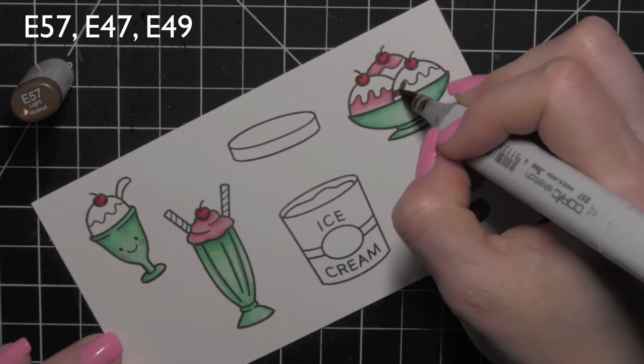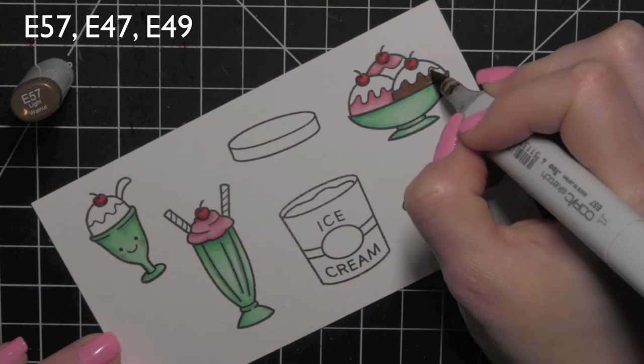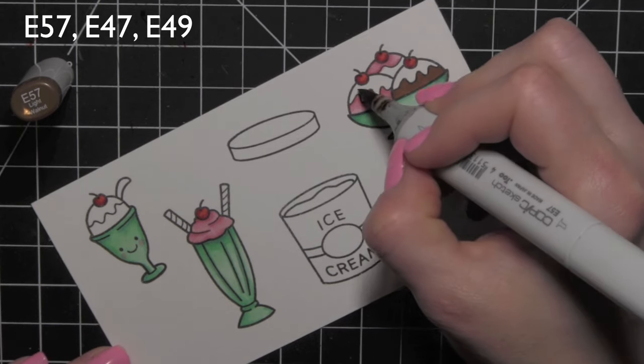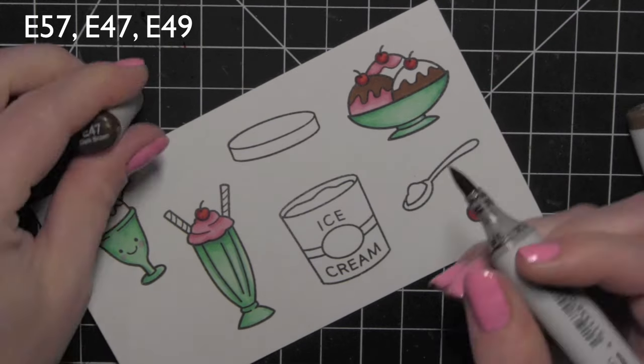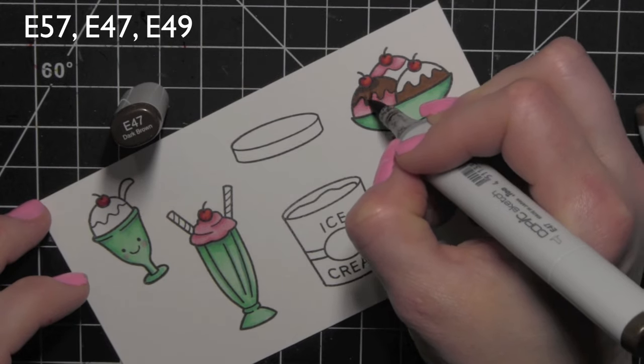Next I am going to color in some chocolate ice cream and I'm creating that with E57, 47 and 49. That's not only for the chocolate ice cream but for the chocolate topping as well.